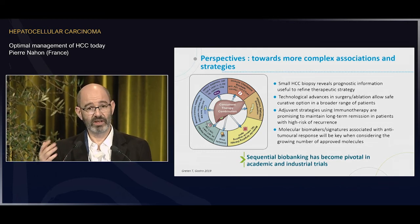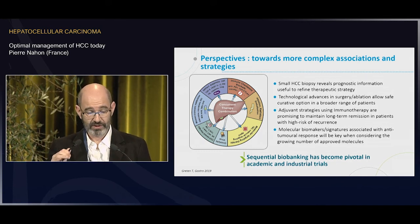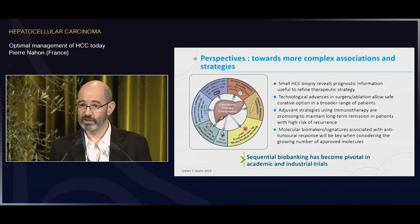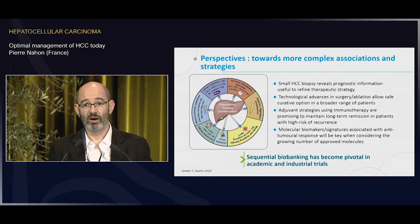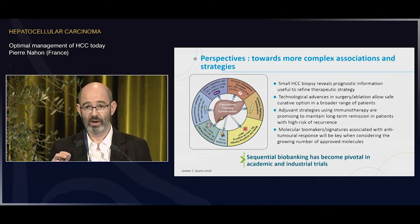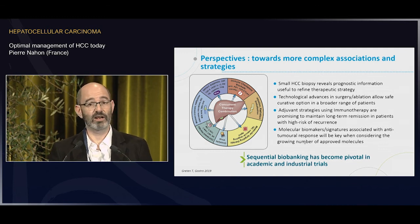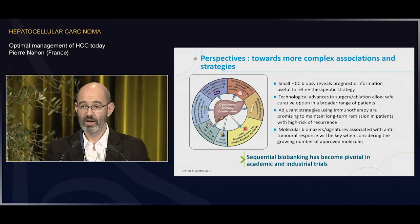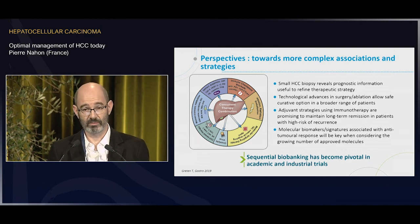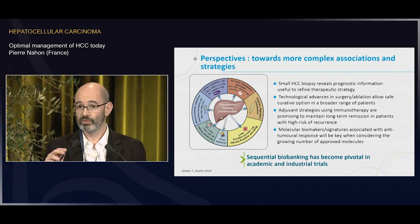To summarize: optimizing HCC management is possible right now, but will be even more feasible tomorrow through the use of biopsy information in small tumors to help refine patient prognosis, and by developing more sophisticated ablation and surgery procedures to broaden the spectrum of patients eligible for remission of liver cancer. Adjuvant strategies are very promising, and we are blessed with ongoing trials whose results will arrive in the coming years. For the palliative setting, clearly we have to rely on molecular information to decide which drug is the right one for a given patient. One of the most important messages is that we must keep on processing sequential biobanking in academic and industrial trials to reach these goals.